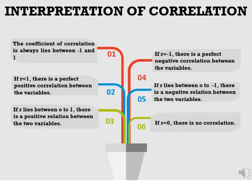How do we get inferences about correlation? The coefficient of correlation always lies between −1 and +1. If r = +1, there is a perfect positive correlation. If r lies between 0 and 1, there is a positive relation. If r = −1, there is a perfect negative relation. If r lies between 0 and −1, there is a negative relation. If r = 0, there is no relation between the two random variables.